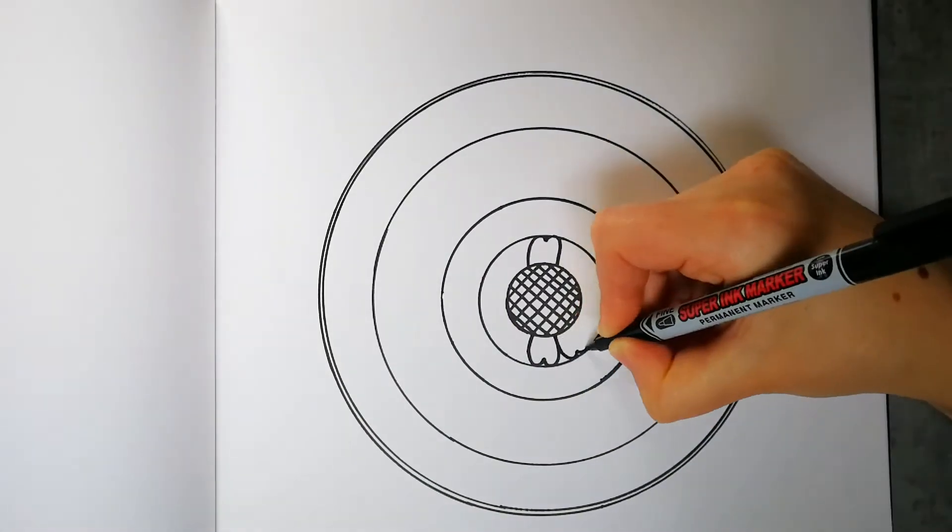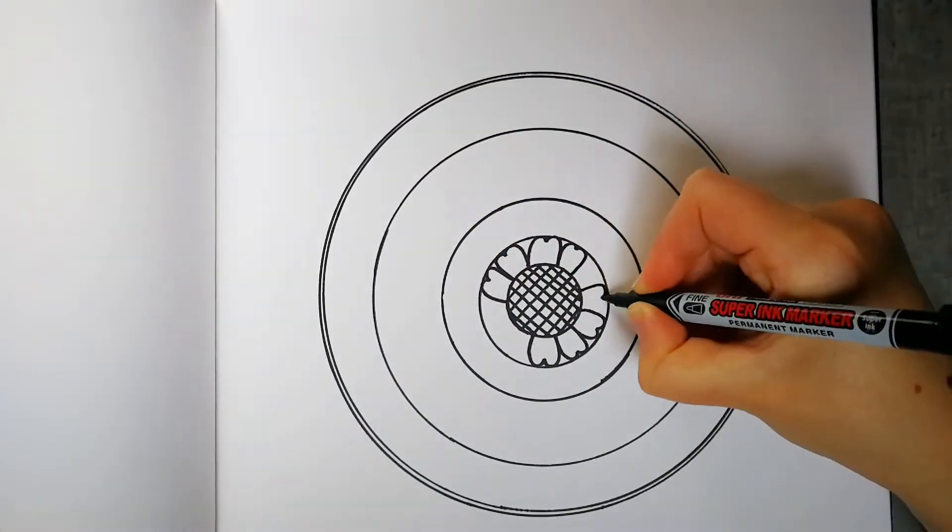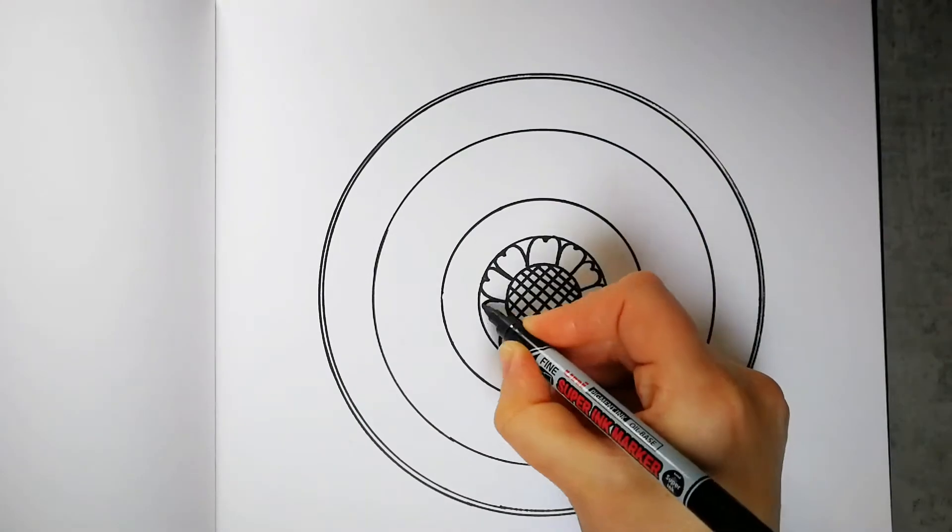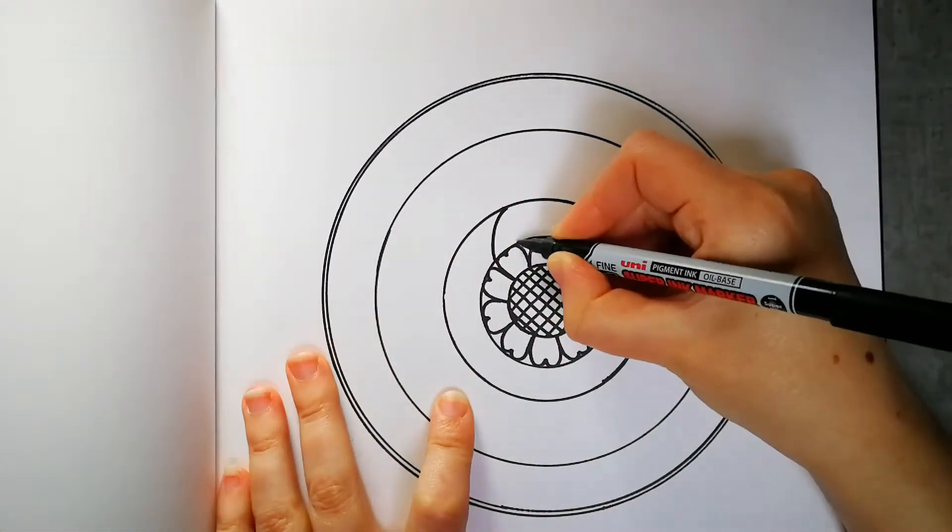The next layers could be a simple ring of dots, petals, teardrops or diamonds, crosses, straight or wavy lines, anything you like. I'm sure it will look great.